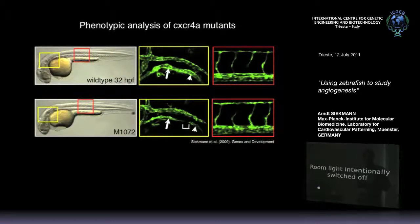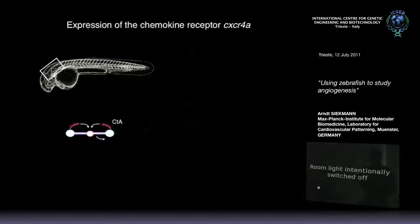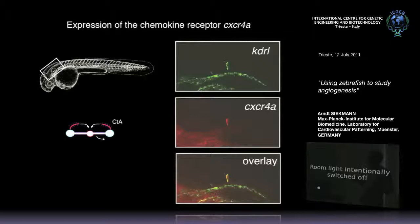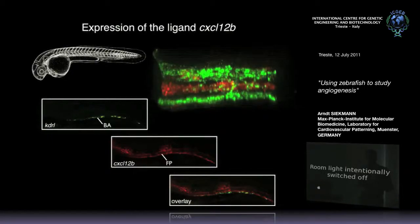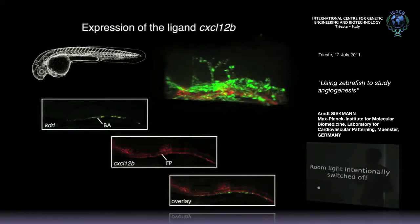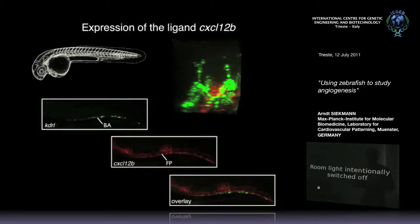Regarding the chemokine receptor CXCR4A in brain vessels - when we checked its expression, we found it exclusively in these sprouting central arteries - not in the primordial hindbrain channel from which they sprout, but specifically in the tip cells, the first cells that migrate out. This makes sense given the expression of the ligand CXCL12B: it is expressed right above the basilar artery forming in the middle of the brain, exactly at the position to which these sprouting central arteries need to migrate. A three-dimensional representation shows this midline CXCL12B expression clearly.